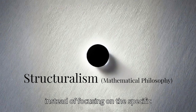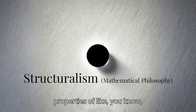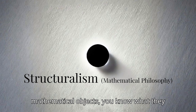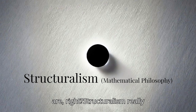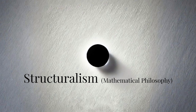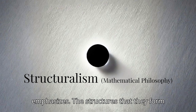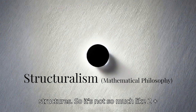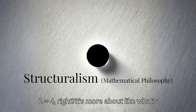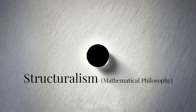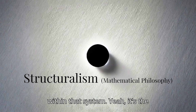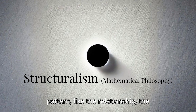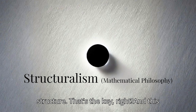Instead of focusing on the specific properties of mathematical objects — what they are — structuralism really emphasizes the structures that they form and their roles within those structures. So it's not so much that two plus two equals four; it's more about what's going on between the two and the four within that system. It's the pattern, the relationship, the structure — that's the key.